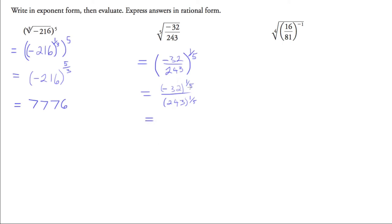And so the fifth root of the negative 32 is negative 2, and the fifth root of 243 is 3. And so the answer is negative two-thirds, which is a rational answer, so we're going to leave it the way that we have here.